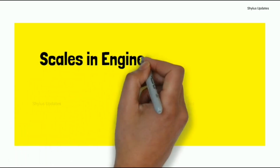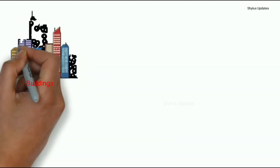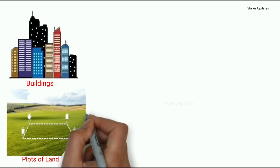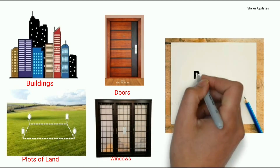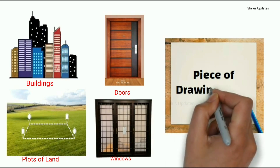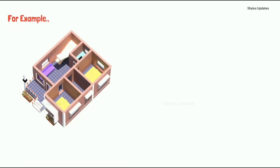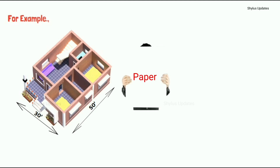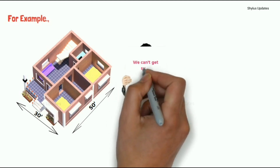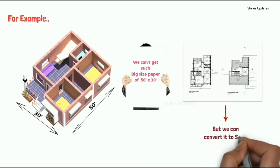Scales in Engineering Drawing. How to convert a drawing to a suitable scale. It is impractical to draw buildings, plots of land, and large parts of buildings such as doors and windows to their full size — they simply would not fit on a piece of drawing paper. For example, if there is a big building of size 50 feet by 30 feet, we can't get such big paper to draw it. But we can convert it to scale and draw it on paper.